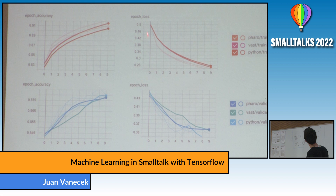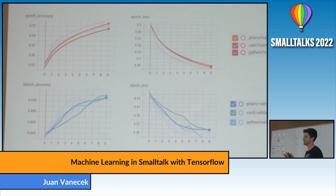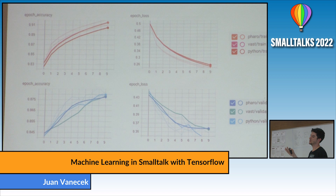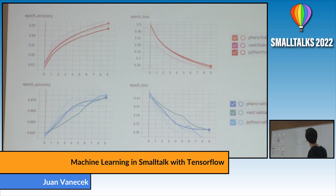Here are some numbers. The loss is the error, so it should go down across training. The accuracy tells you what fraction of the dataset was predicted correctly — for example, if the true label was 1 and the model predicted 1, that's correct. You can see that Pharo, VA Smalltalk, and Python produce very similar results with no difference at all. The training and validation metrics are also very similar across all three.